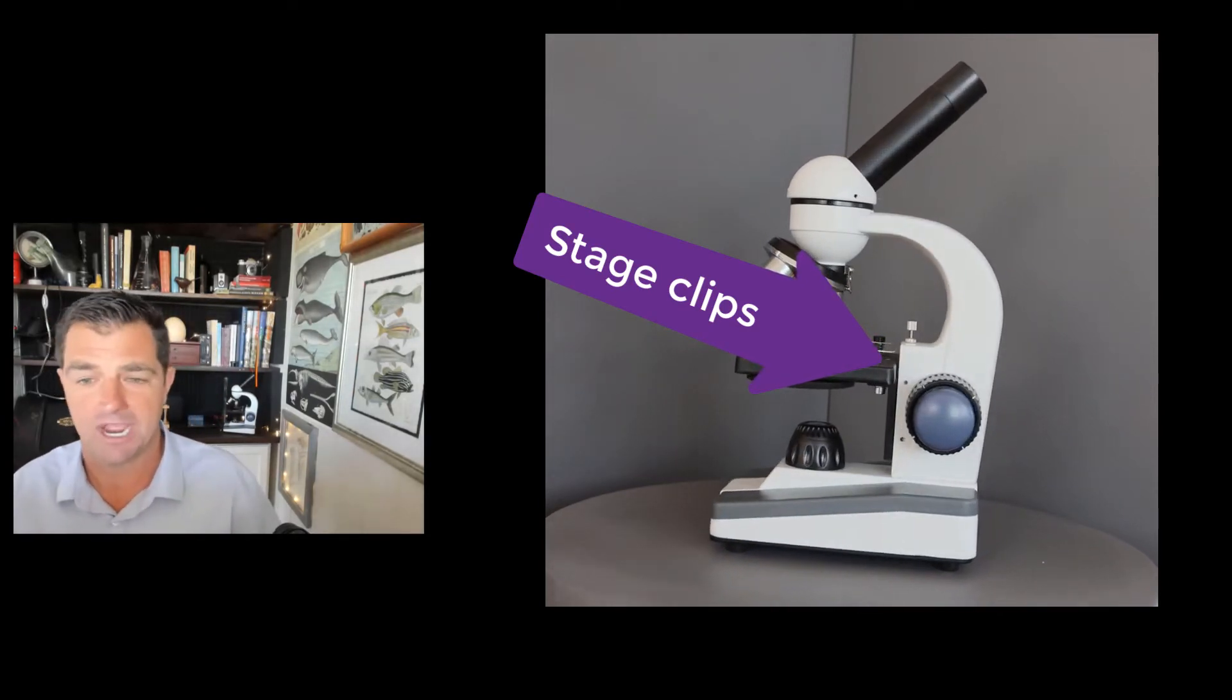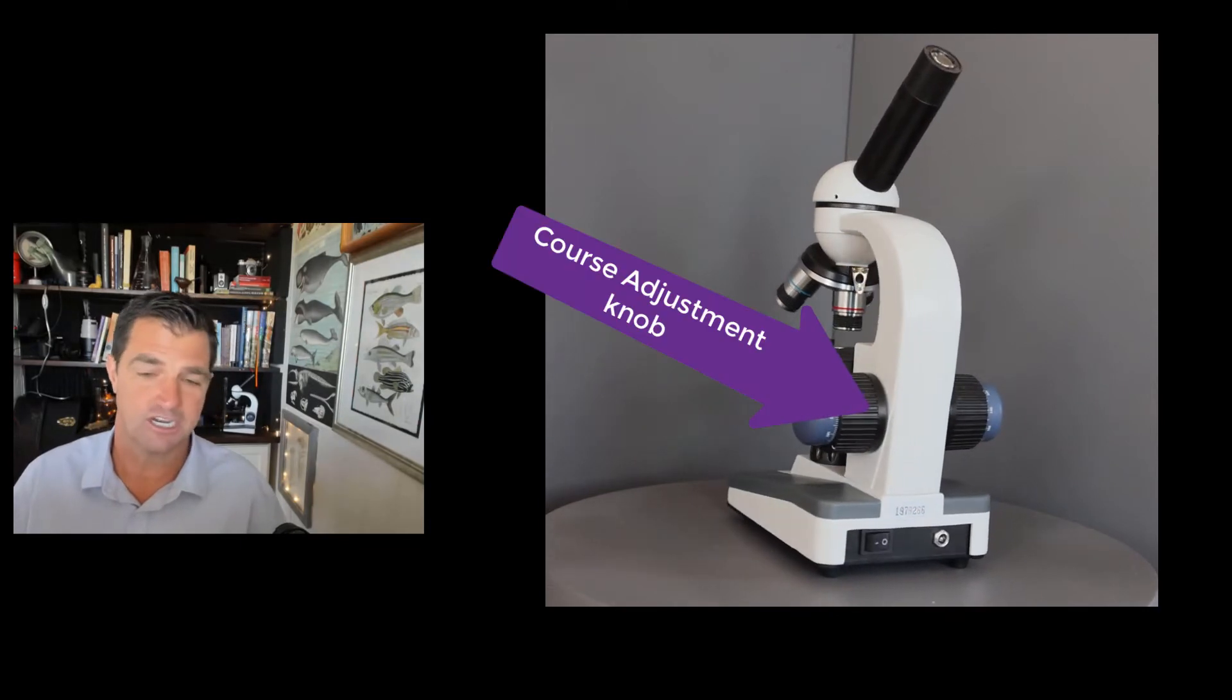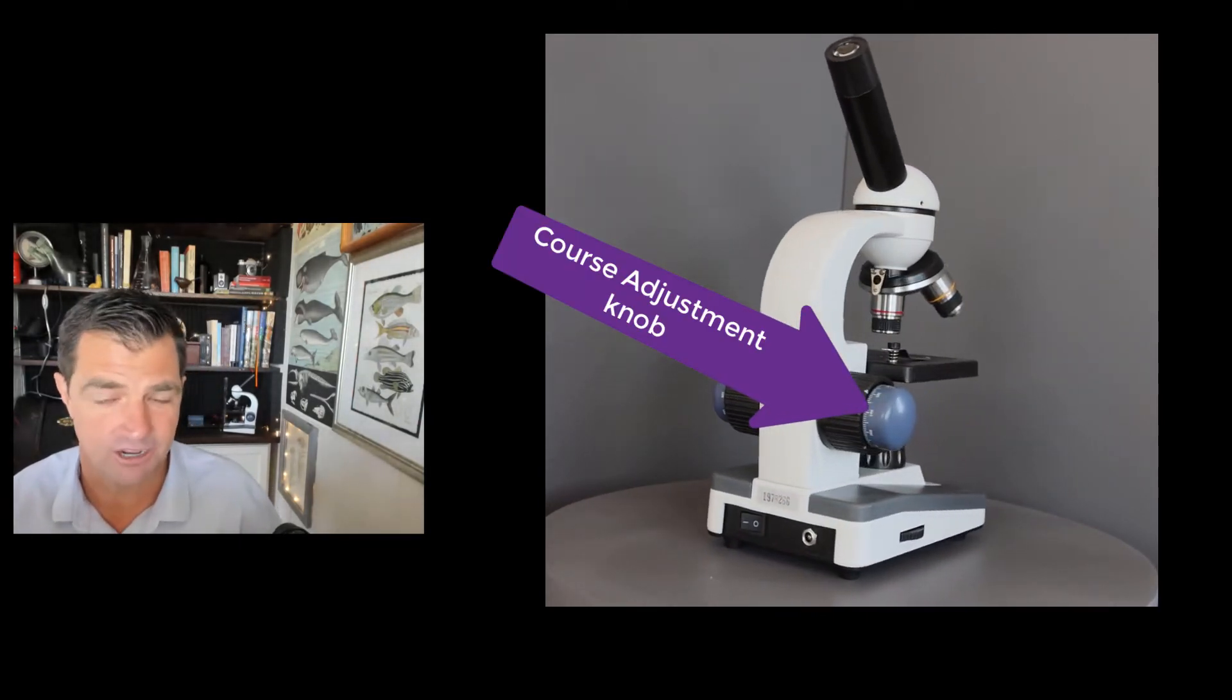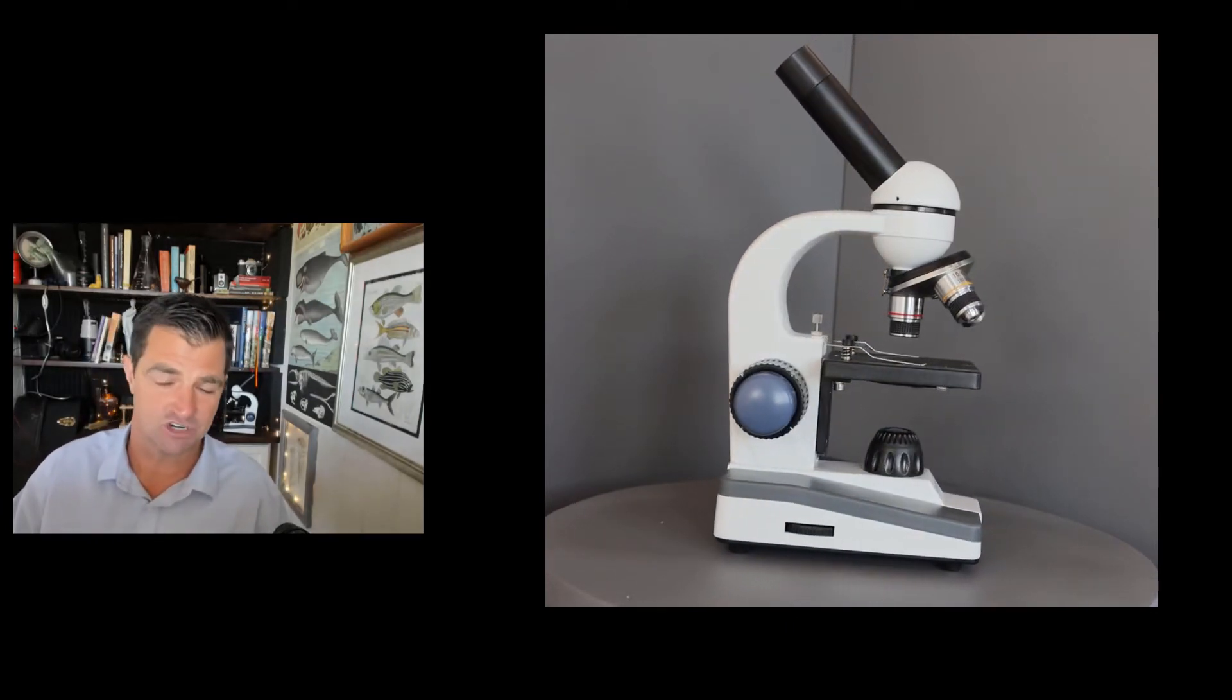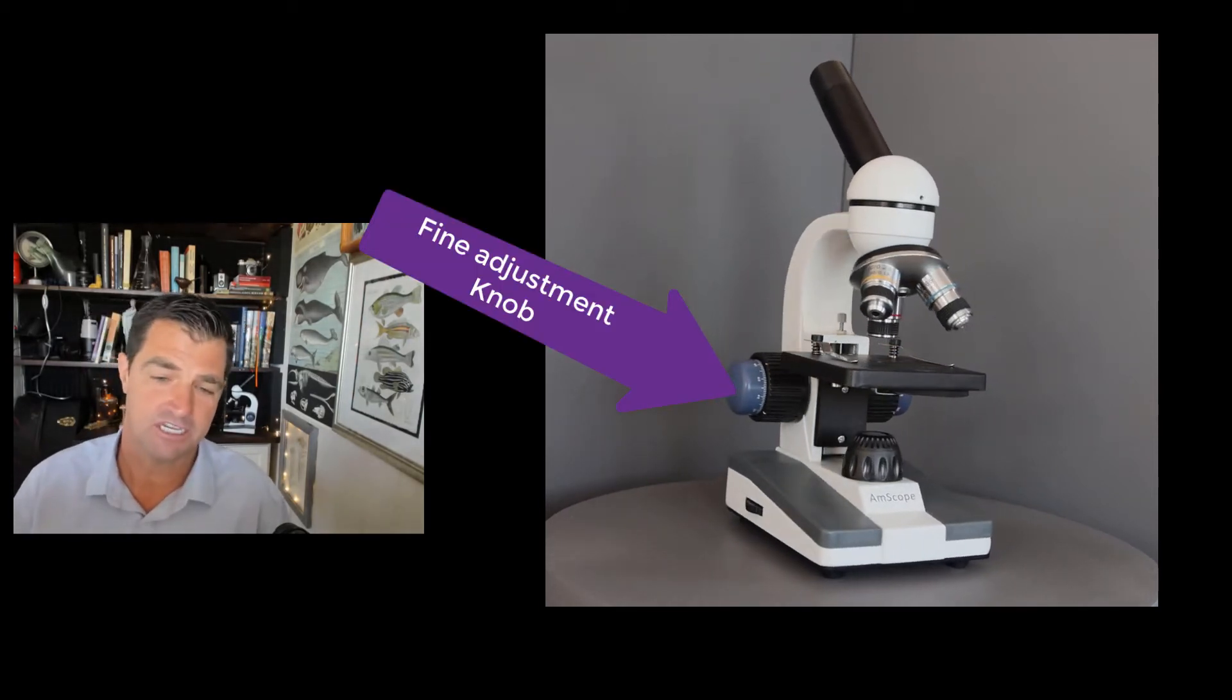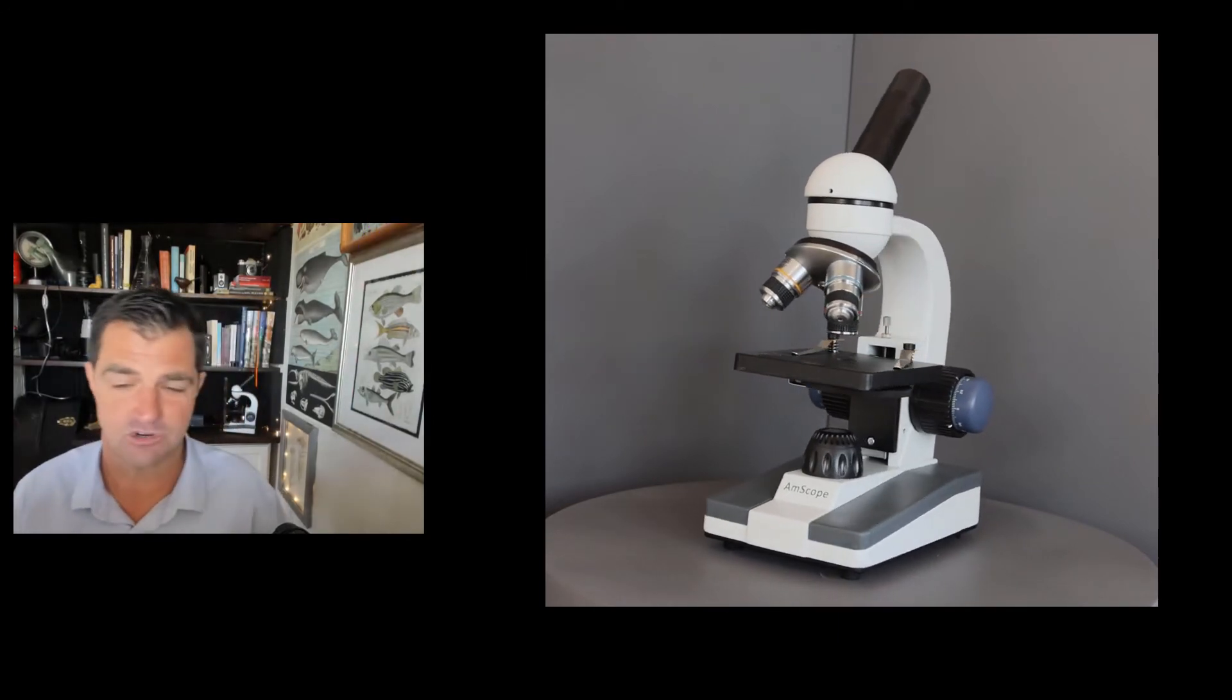The innermost knob is called the course adjustment knob, and when you turn it, it moves the stage up and down. Outside of that one is the fine adjustment knob, which is used for fine focusing your specimen.